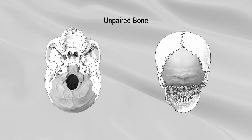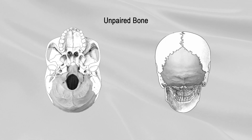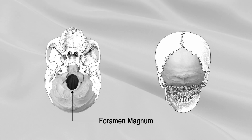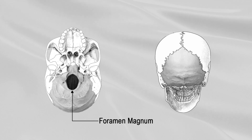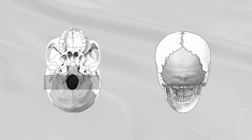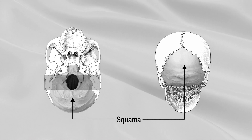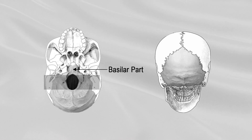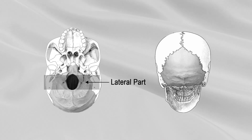The occipital bone is an unpaired bone situated at the postero-inferior part of the cranium. It is pierced by a large oval aperture, the foramen magnum, through which the cranial cavity communicates with the vertebral canal. The occipital bone is divided into three parts: the curved, expanded plate behind the foramen magnum is called the squama; the thick, quadrilateral piece in front of the foramen is called the basilar part; whilst on either side of the foramen is the lateral part.